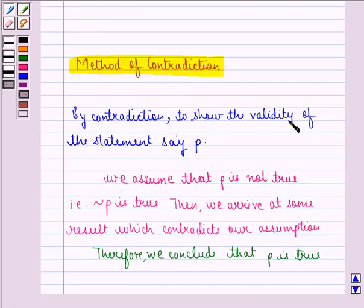By contradiction, to show the validity of the statement, say P, we assume that P is not true. Then we arrive at some result which contradicts our assumption, therefore we conclude that P is true.